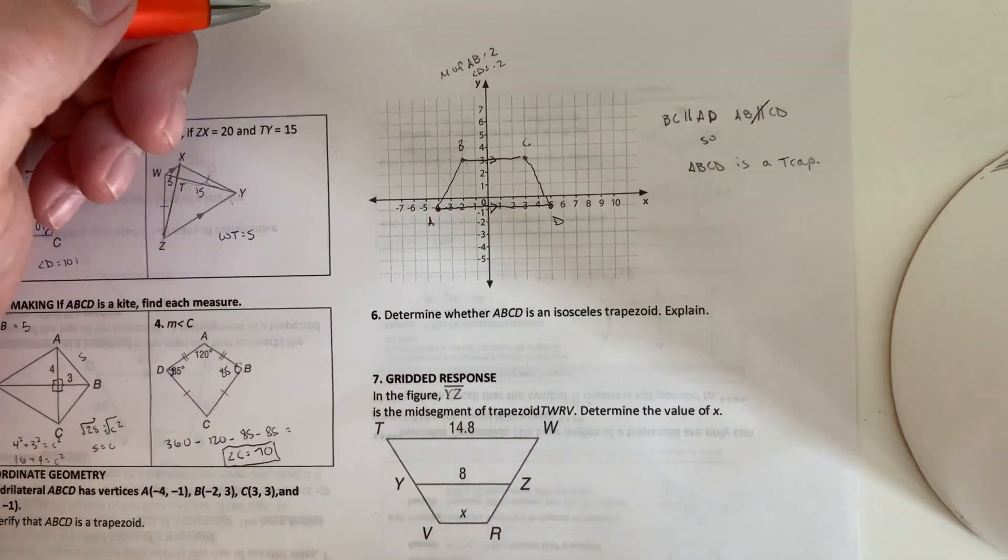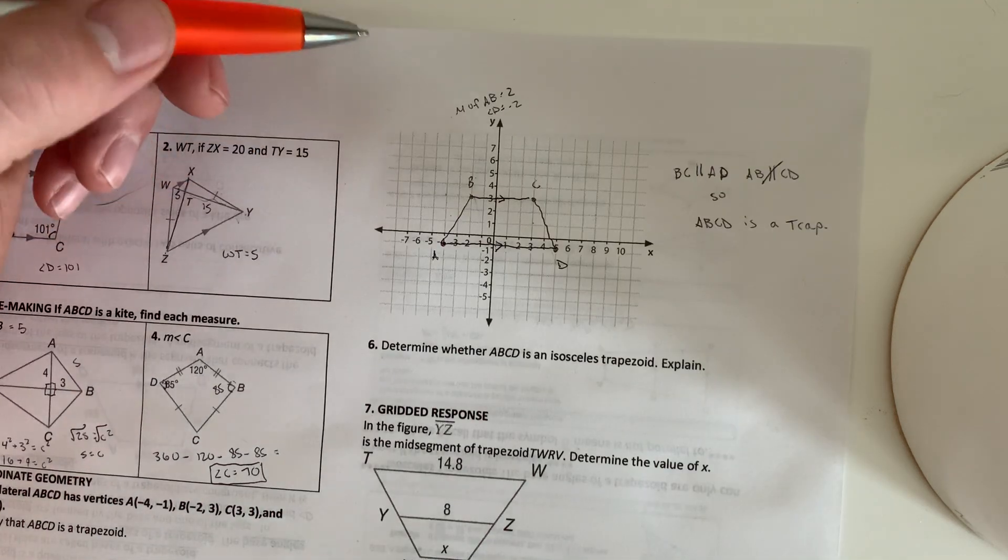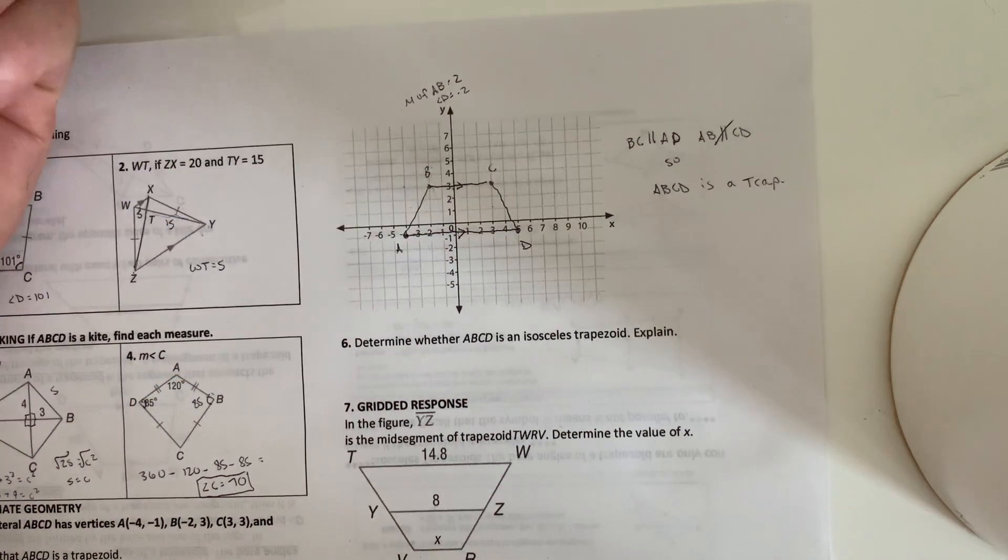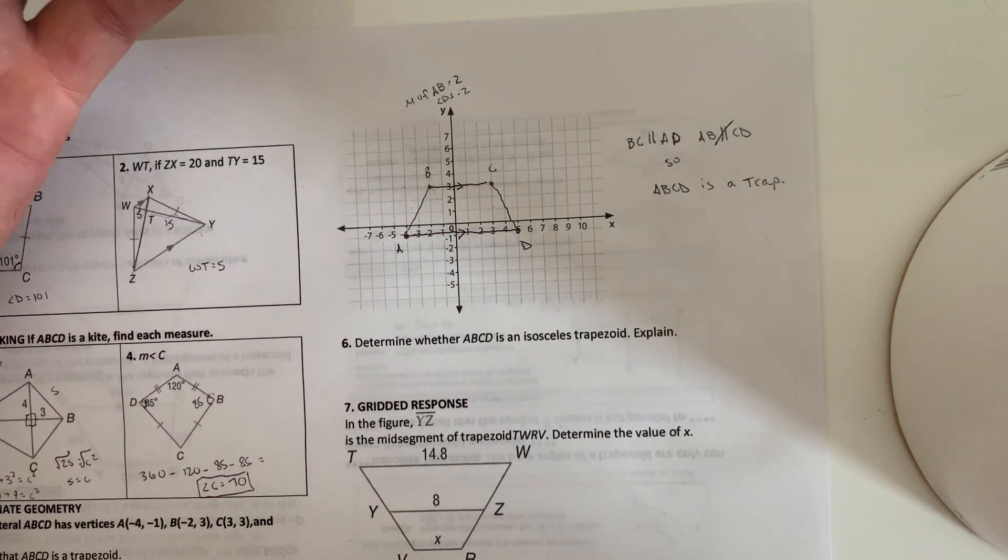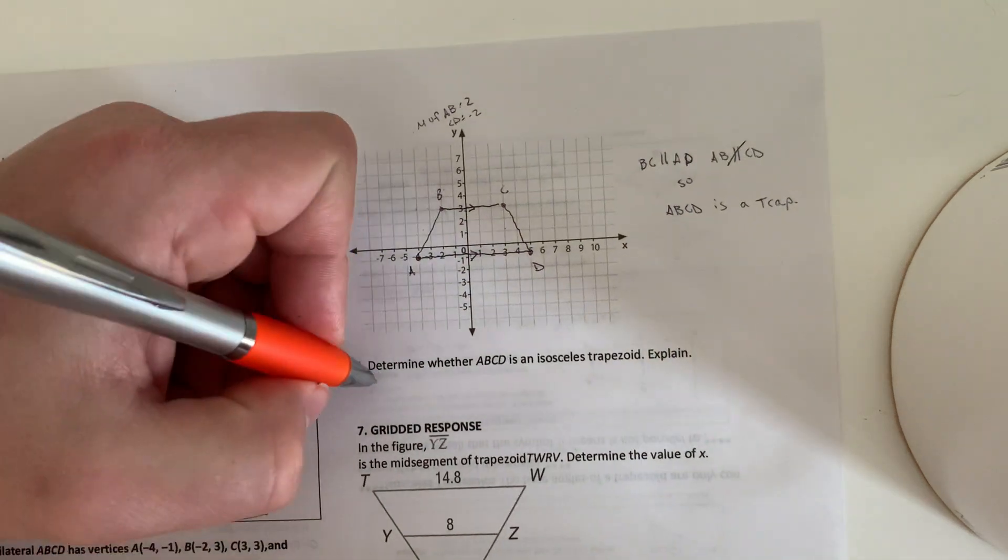And then determine whether ABCD is an isosceles trapezoid and explain. Well, since we already proved it was a trapezoid, all we need to do is find the distance of AB and CD. And if they're the same, then it is going to be an isosceles trapezoid. So we just use the distance formula.